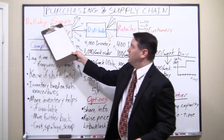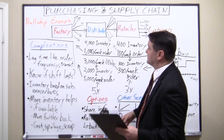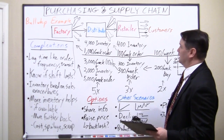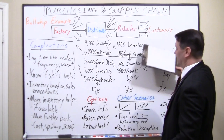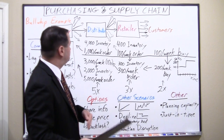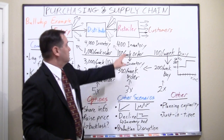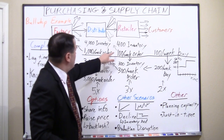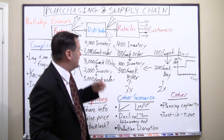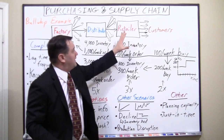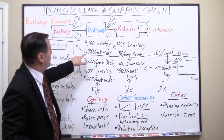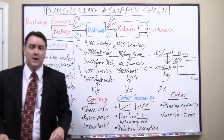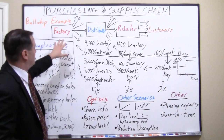I have an example of what's called the bullwhip effect. Let's say you have a supply chain where you have a factory, a distributor, and the distributor sells to many retailers who sell to many customers. In steady state, customers buy 100 a week from a retailer. The retailer keeps 400 in inventory and orders 100 a week to replace what they sold. The distributor has 4,000 in inventory and sells 1,000 a week to 10 retailers, ordering 1,000 from the factory.